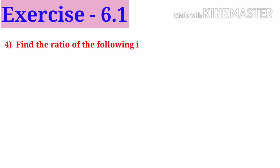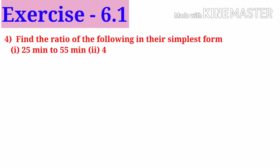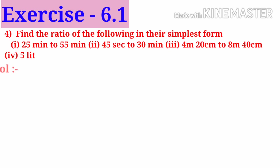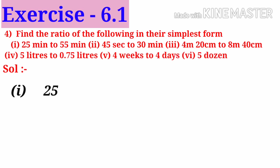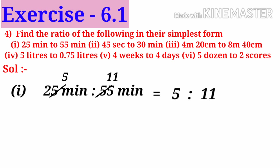Find the ratios of the following in their simplest form. Solution number 1: 25 minutes to 55 minutes. Observe that 5 is there in the unit place. So these are divisible by 5. On simplification by 5, we get 5 to 11. So the ratio is 5 is to 11.